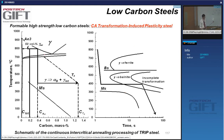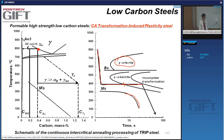For continuous annealing, you have the intercritically annealed austenite which you cool fast enough to 400 degrees C to avoid ferrite formation. During the bainite transformation the MS temperature starts to drop as carbon is added to the austenite. The bainite transformation stops when incomplete — when you've reached the T0 line. Then you can cool down because the MS temperature is much lower than room temperature.